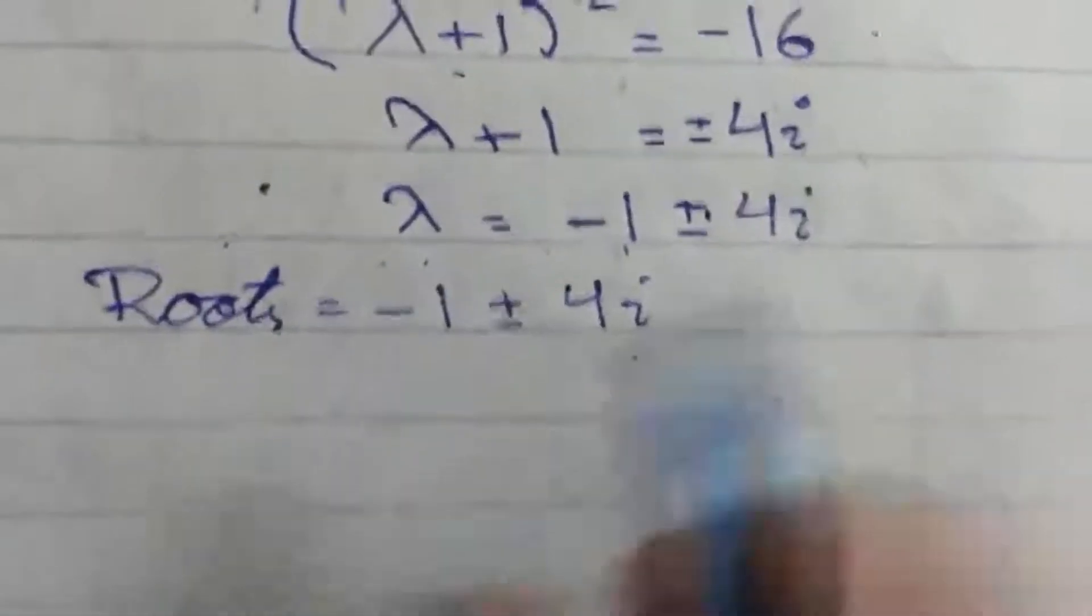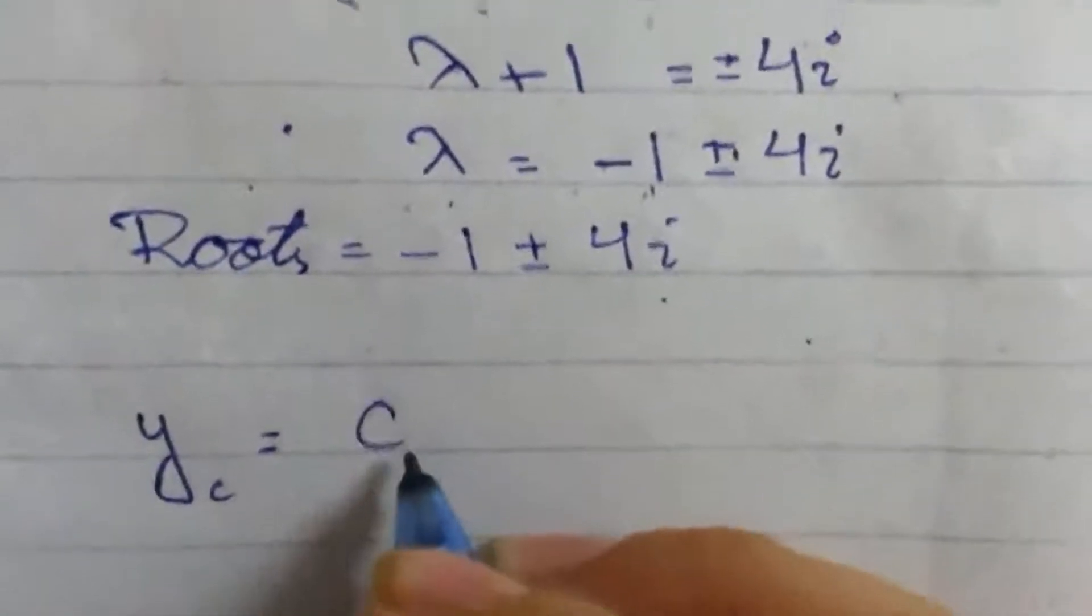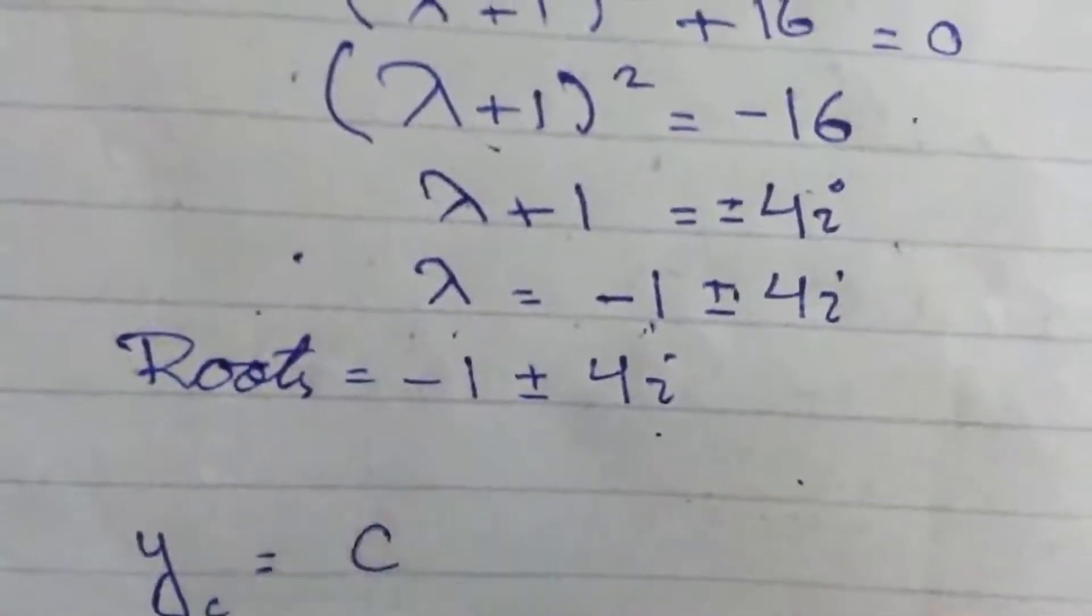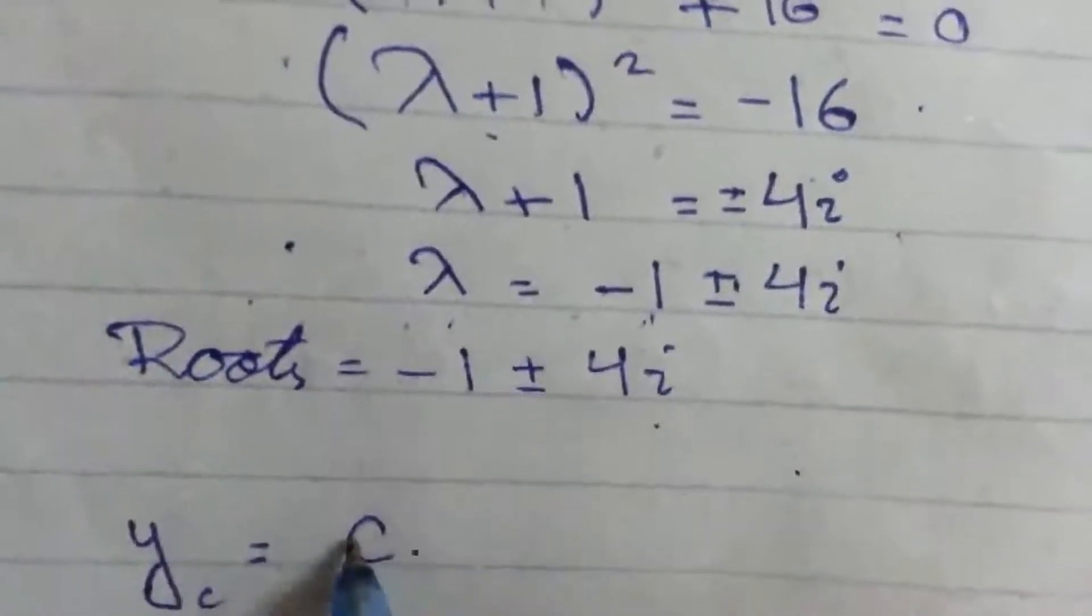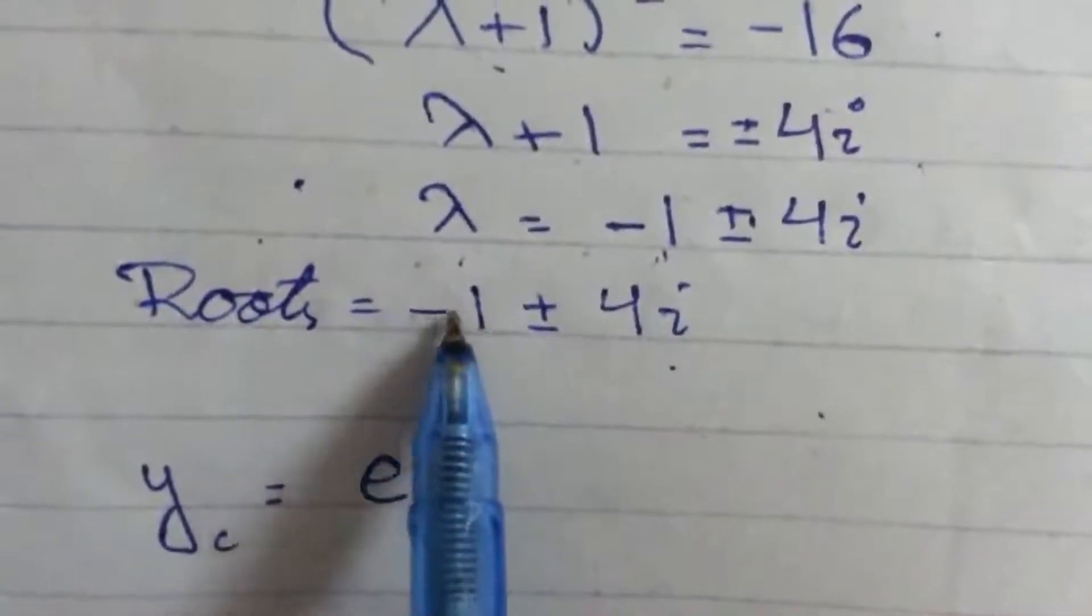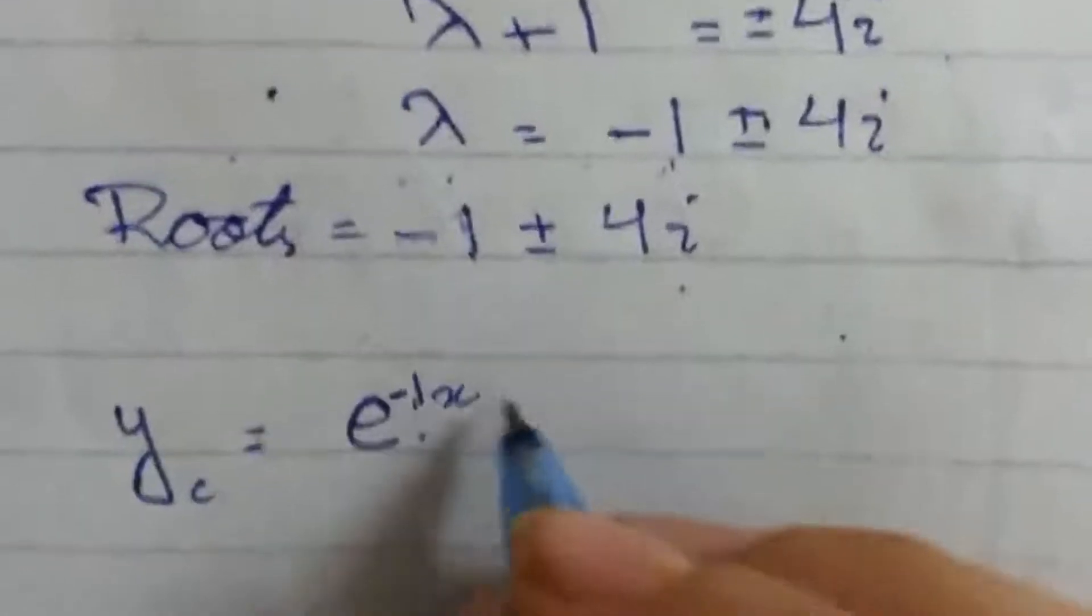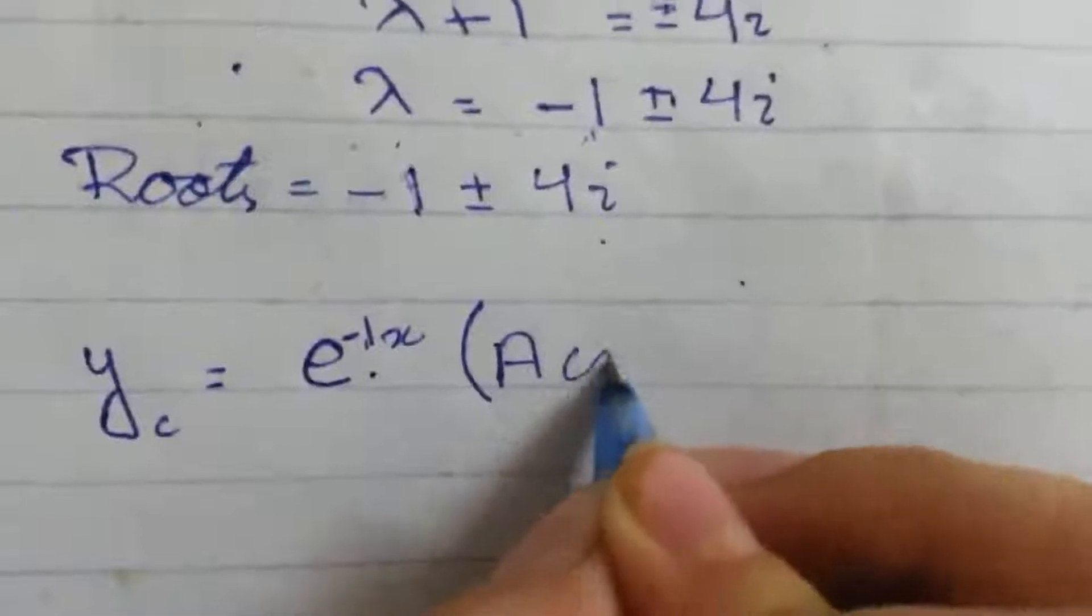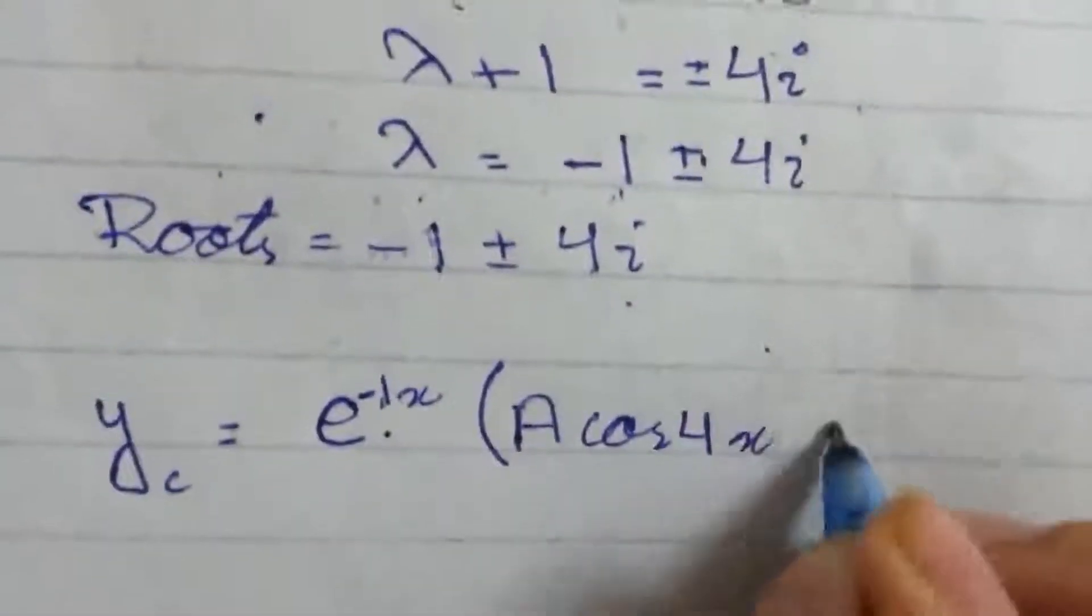Now how we will write this root in a yc? We will write this as: if we have a real number, in the previous one we used c₁e^(ax), but in this one we will use e^(-1x), e^(-x) into, in brackets, a cos 4x plus...